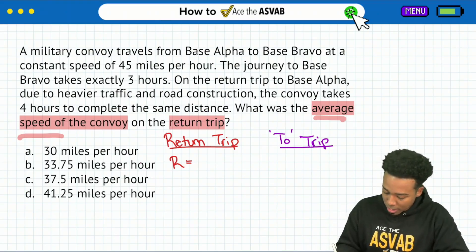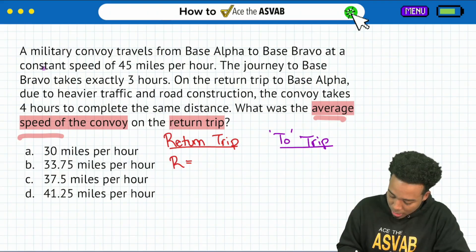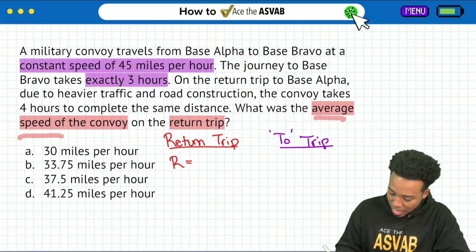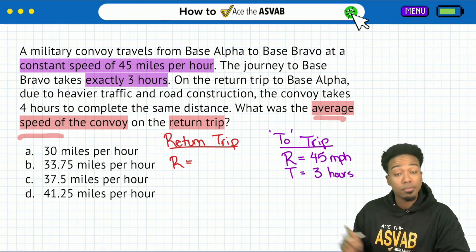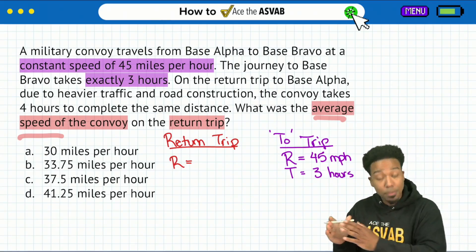So let's go ahead here and write this constant speed, 45 miles per hour. And the trip took exactly three hours. So we're going to write it over here. The rate to base bravo, 45 miles per hour. The time it took was three hours. Let's keep reading here.